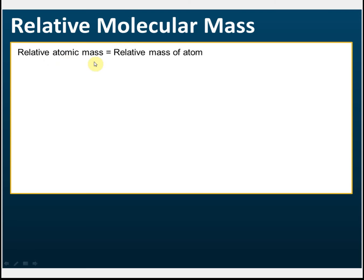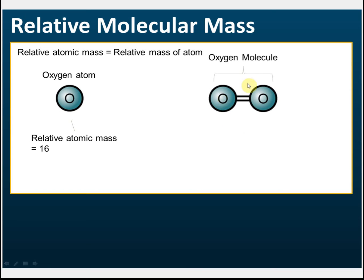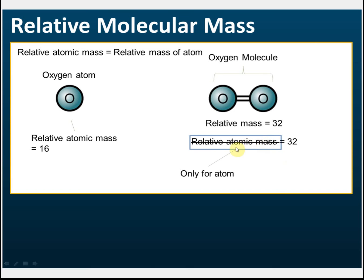Relative molecular mass versus relative atomic mass: relative atomic mass is the relative mass of atoms. For example, an oxygen atom has a relative atomic mass of 16. Two oxygen atoms combine to form an oxygen molecule, with a relative mass of 32. But we can't say the relative atomic mass of this molecule is 32, because this is not an atom — relative atomic mass is only for atoms.